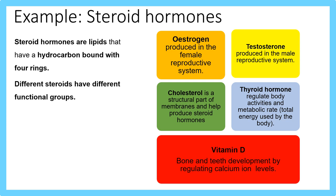Steroid hormones are lipids that have a hydrocarbon band with four rings — hydrocarbon meaning they consist of hydrogen and carbon atoms only. Different steroids have different functional groups. Examples include: oestrogen, produced in the female reproductive system; testosterone, produced in the male reproductive system; cholesterol, which is the structural part of membranes and also helps produce steroid hormones; thyroid hormone, which helps regulate activities and metabolic rate; and vitamin D, involved in bone and teeth development by regulating calcium ion levels.